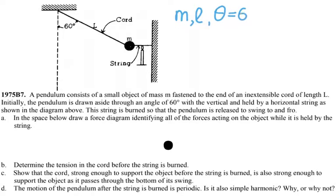The figure shows 60 degrees. The string is burned so that the pendulum is released to swing to and fro. In the space below, draw a force diagram identifying all the forces acting on the object while it is held by the string.